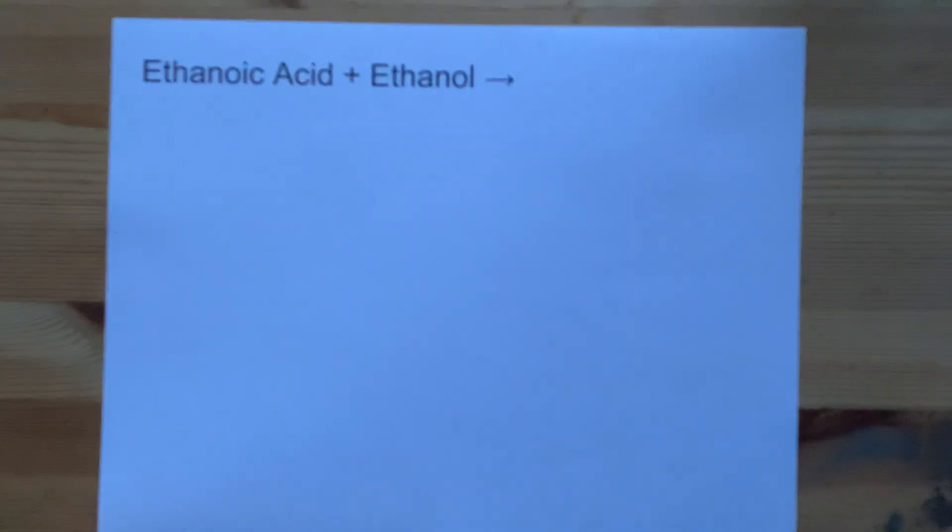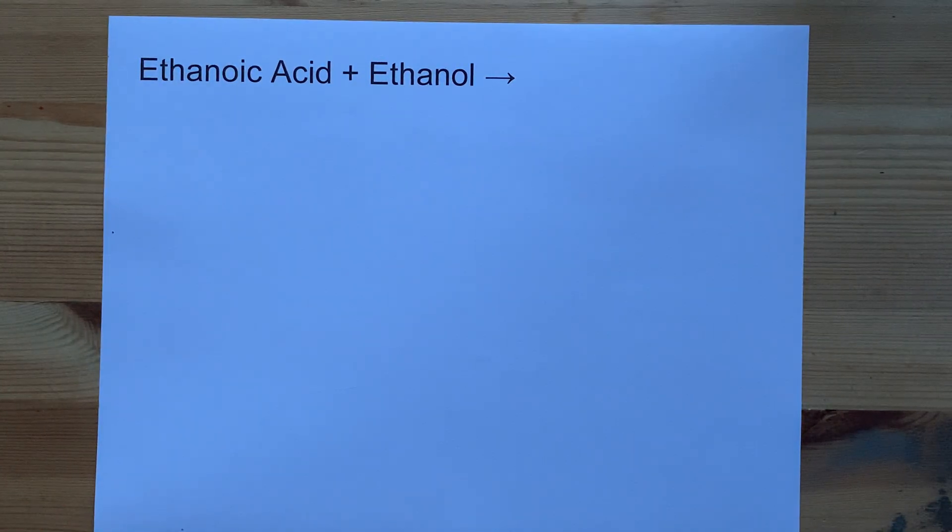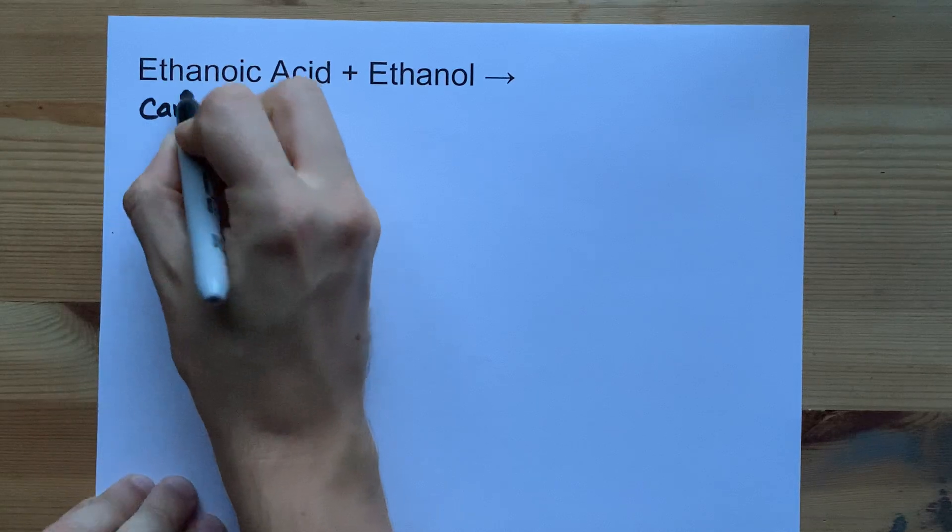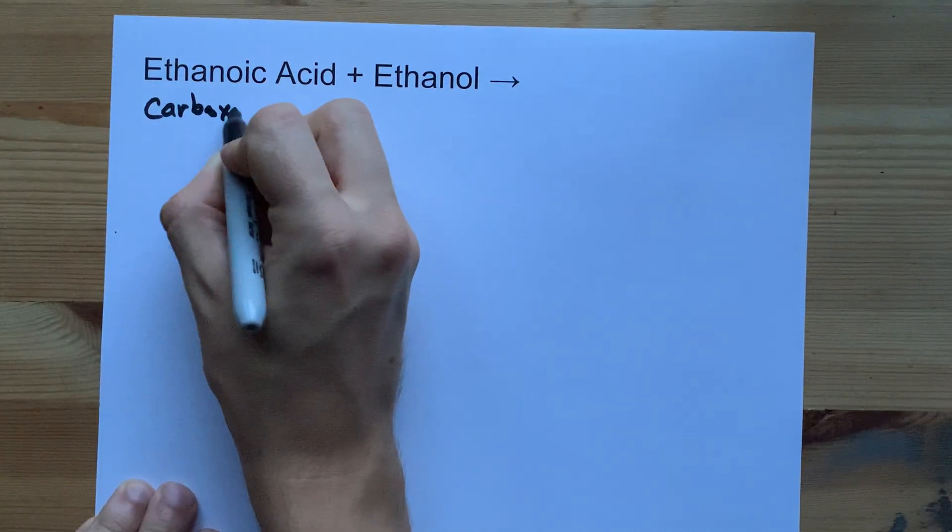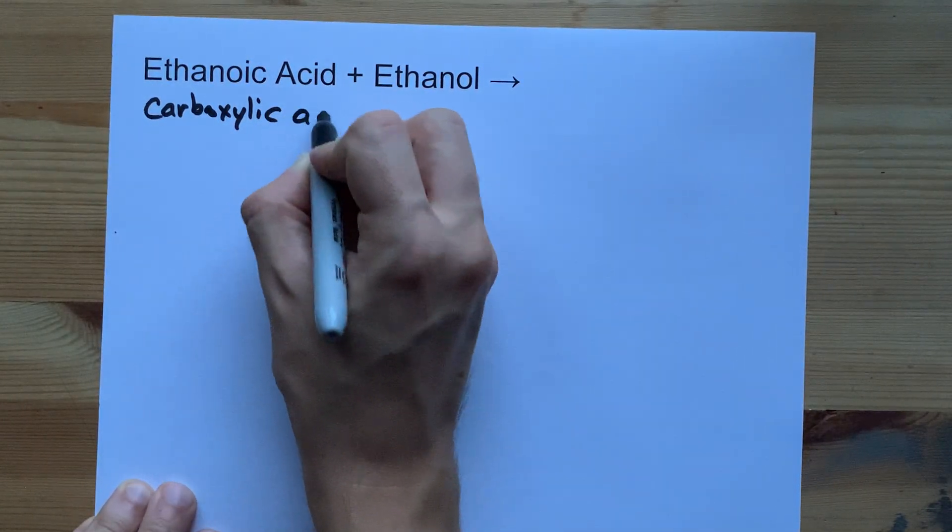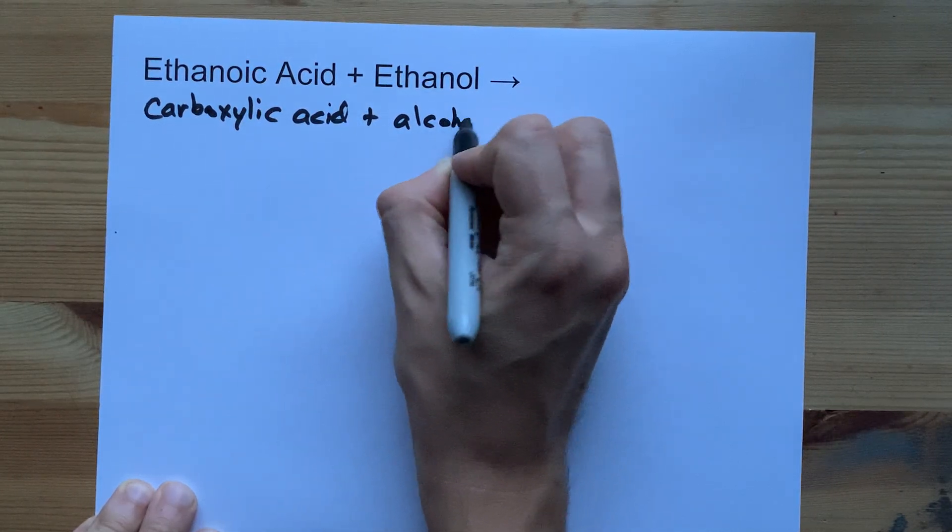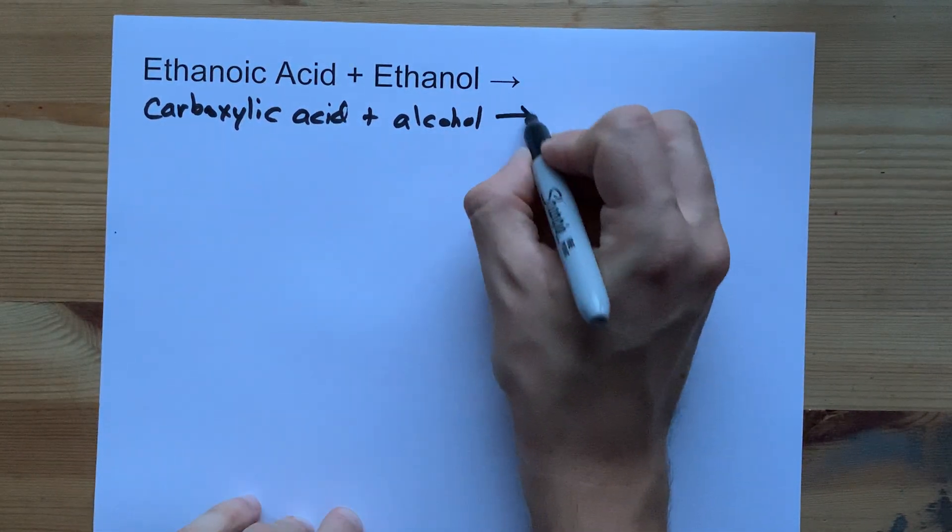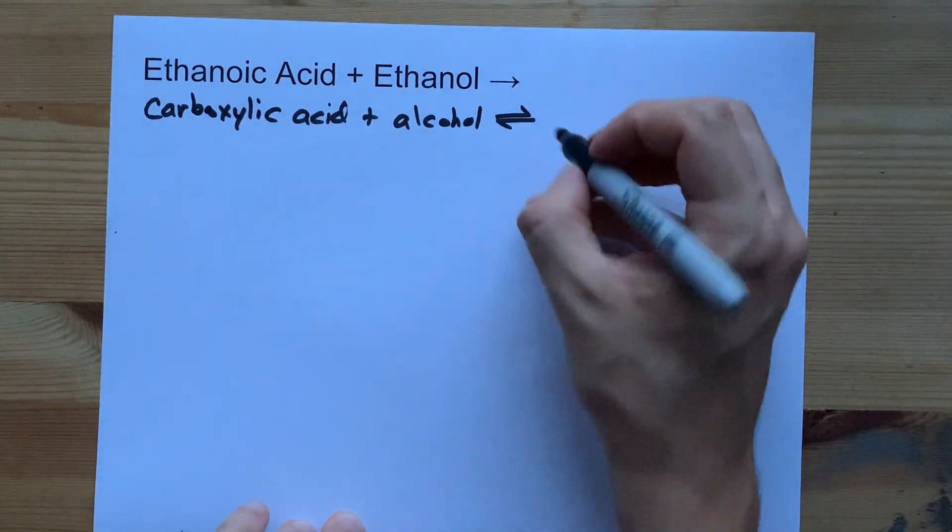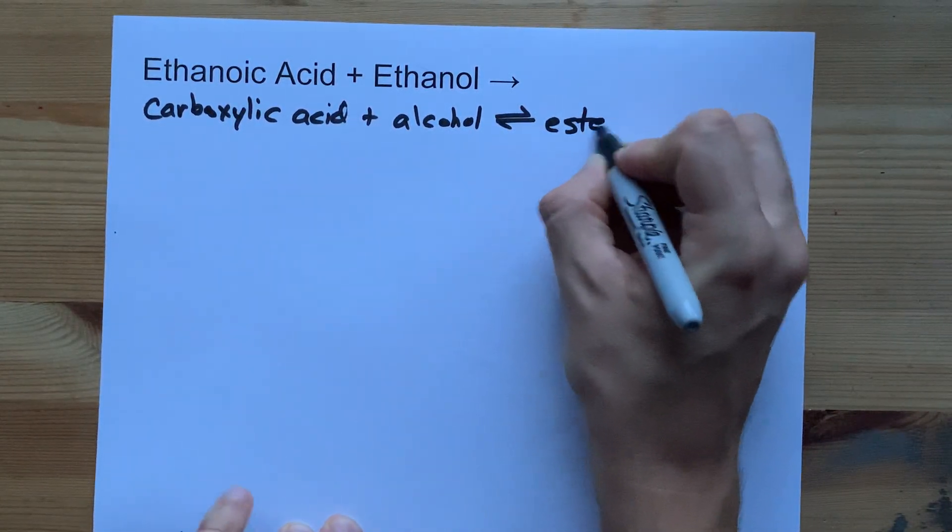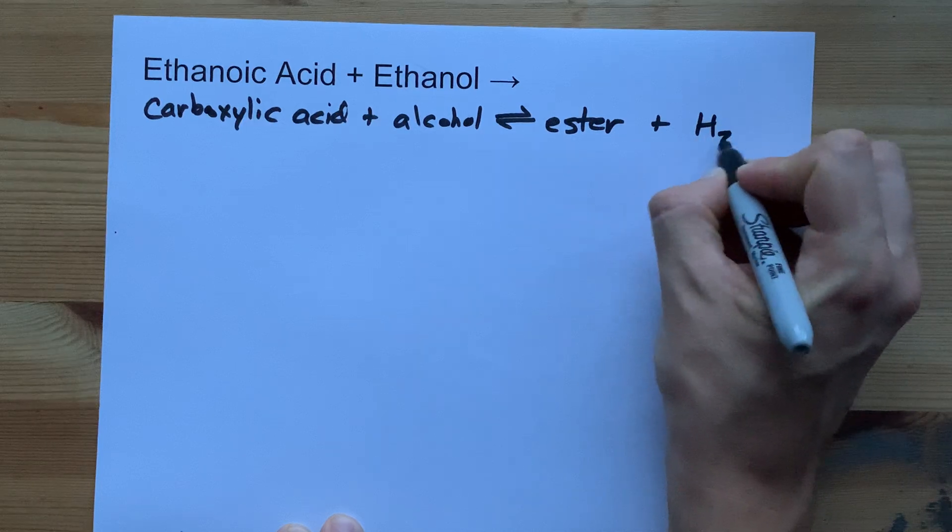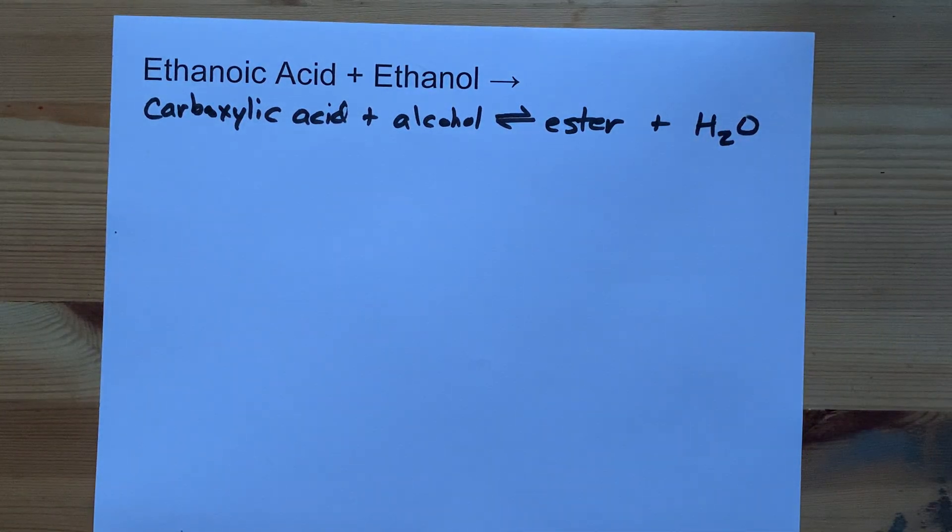This is everyone's favorite esterification. You've got a carboxylic acid in ethanoic acid and you've got an alcohol in ethanol. When you mix carboxylic acids and alcohols, you end up with what's called an ester. You get water out as a byproduct.